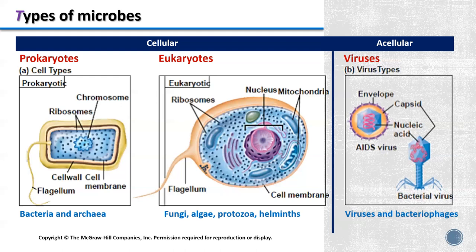For eukaryotes, they include protists, fungi, algae, protozoa, helminths, plants, and other animals. The defining feature of a eukaryotic cell is that it has a nucleus — 'eu' means true and 'karyote' means nucleus — in which the linear DNA genome is packaged into one or multiple chromosomes. Eukaryotic cells also contain multiple membrane-bound organelles, including mitochondria, that are not found in prokaryotic cells.